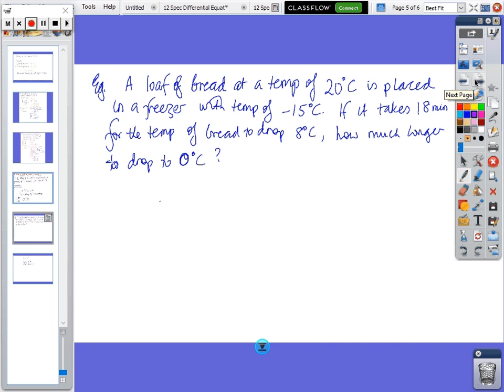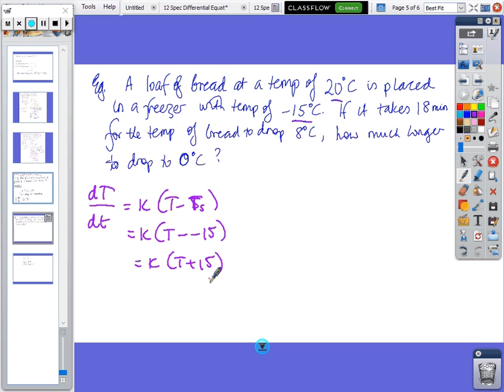Basically the temperature change with respect to time is proportional to the difference between the temperature and the surroundings. A loaf of bread at a temperature of 20°C is placed in the freezer with the temperature of -15°C. If it takes 18 minutes to drop to 8°C, how much longer to drop to 0°C? So dT/dt equals k(T - T_s), so it's going to be k(T - (-15)), which is k(T + 15).